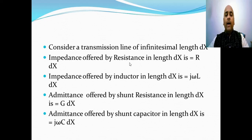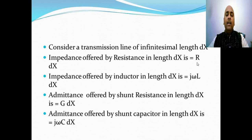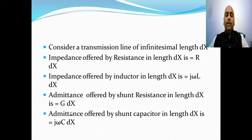For a transmission line of infinitesimal length dx, the impedance offered by the resistance is R·dx, since R is resistance per unit length. The impedance offered by the inductor over length dx is jωL·dx. Similarly, the admittance offered by the shunt capacitor over length dx is jωC·dx.